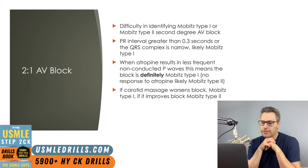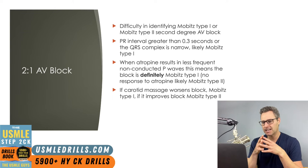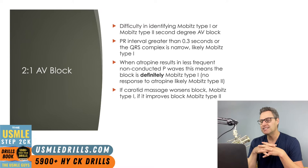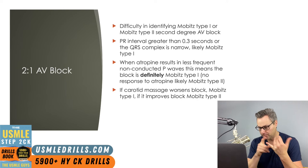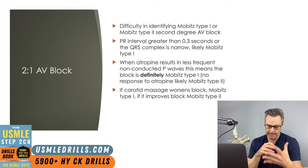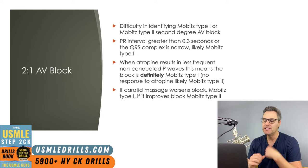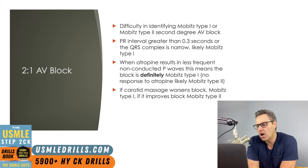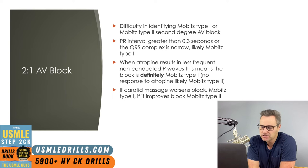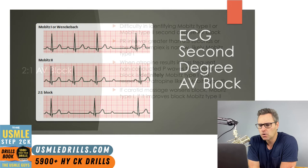With a 2:1 AV block on ECG, it's difficult to know if you're dealing with Mobitz Type 1 or Type 2, since the cycle is too short to see the elongating PR interval or the dropped beat pattern. Differentiating clues: a PR interval greater than 0.3 seconds or a narrow QRS complex suggests Mobitz Type 1. If atropine results in less frequent non-conducted P waves, the block is definitely Mobitz Type 1. Lack of response to atropine suggests Type 2 but isn't diagnostic. Carotid massage causing a higher grade block indicates Type 1; improvement with carotid massage is consistent with Type 2.